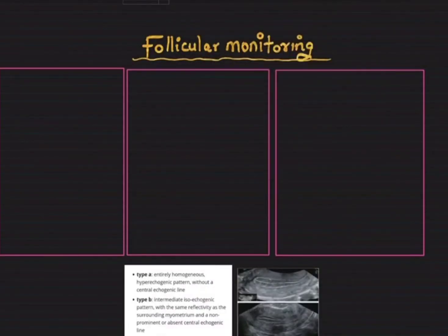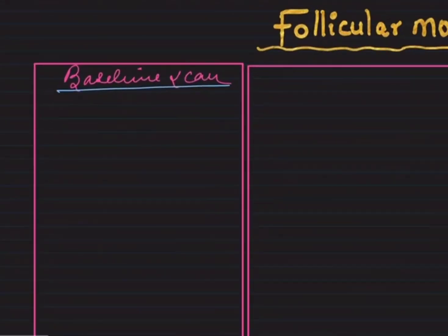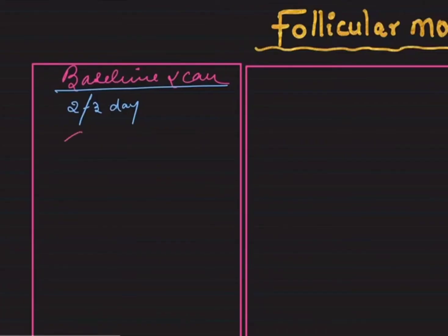Follicular monitoring is done in three phases. The first is the baseline scan, which is done on day two or three of the menstrual cycle — the second or third day of LMP. On transvaginal ultrasound, we scan the uterus and ovaries as usual. In the baseline scan, we focus on the ovary — within the ovary there are follicles and in between there is stroma.